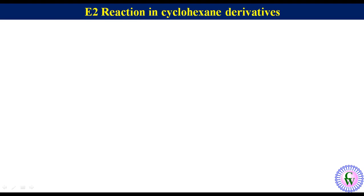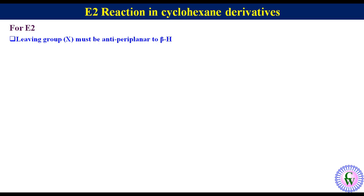Hello friends. Today we are going to discuss E2 reaction in cyclohexane derivatives. In the previous lecture we learned that for the E2 reaction, the leaving group X must be anti-periplanar to the beta hydrogen. In a cyclohexane system, this is possible only when X and the beta hydrogen are both at the axial position.